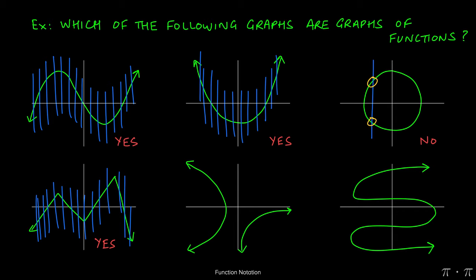For this next one, the bottom middle, we notice that if we make a vertical line there, we have two points of intersection, covered in yellow. This means that it is not a function.